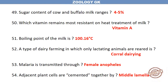Which vitamin remains most resistant on heat treatment of milk? Vitamin A. The boiling point of milk is 100.16 degrees Celsius. A type of dairy farming in which only lactating animals are reared is choral dairying. Malaria is transmitted through the female Anopheles mosquito. Adjacent plant cells are cemented together by the middle lamella.